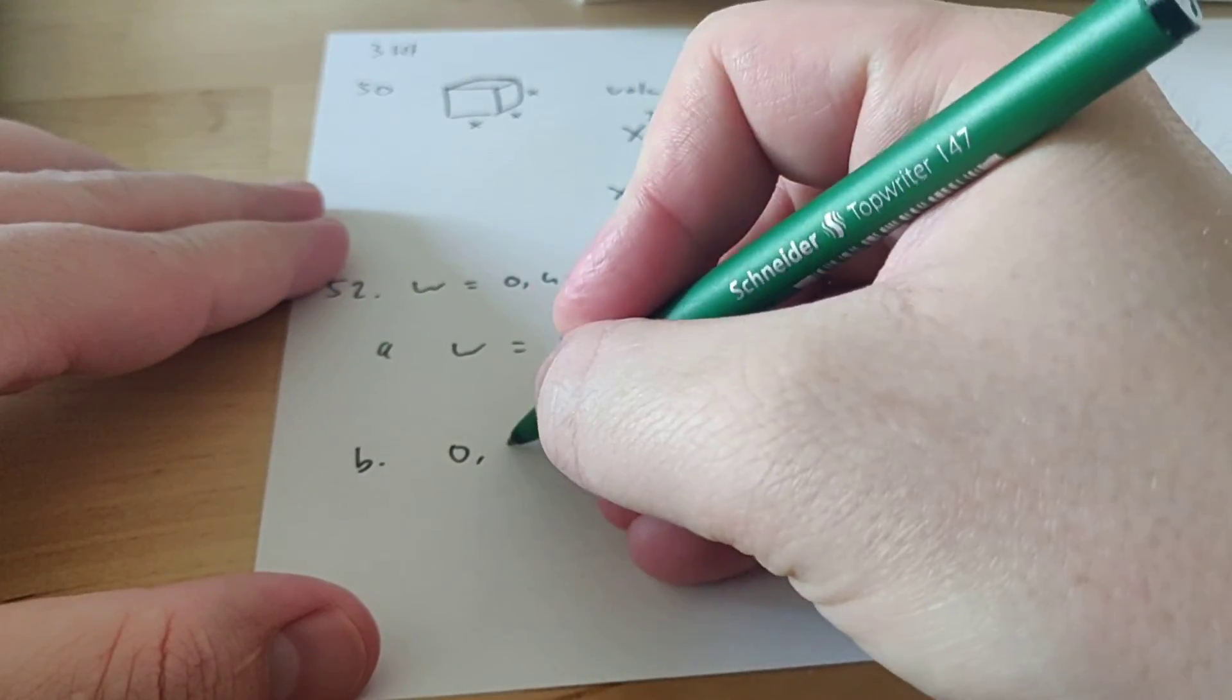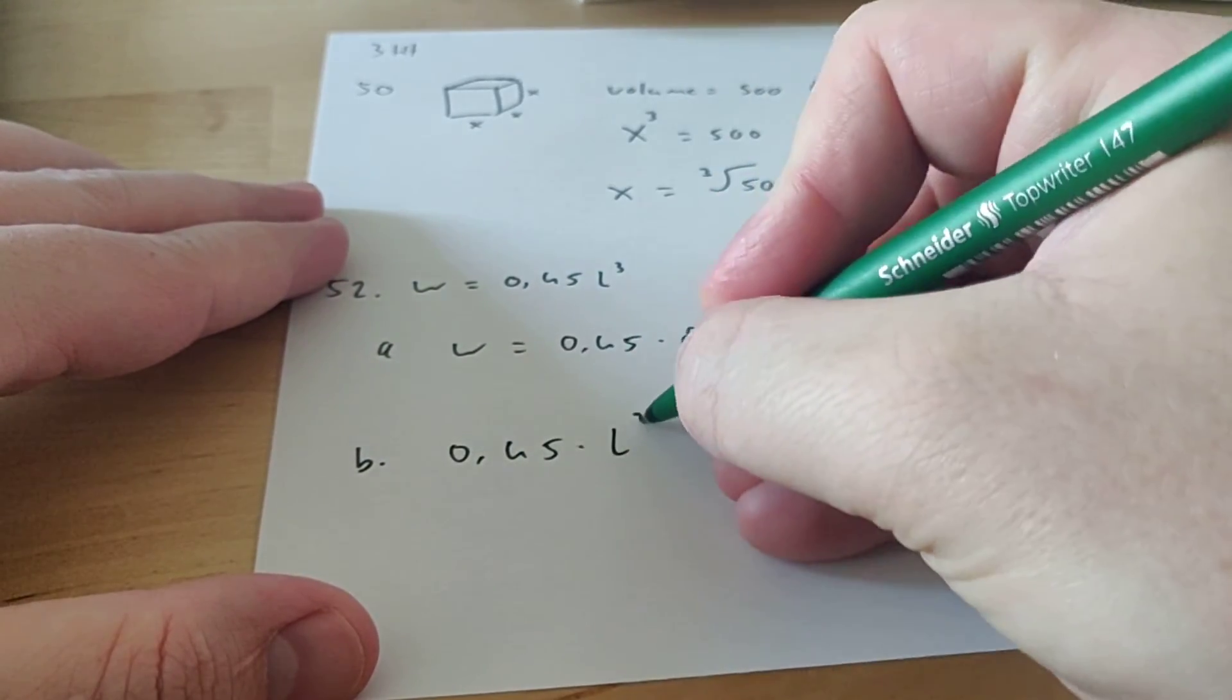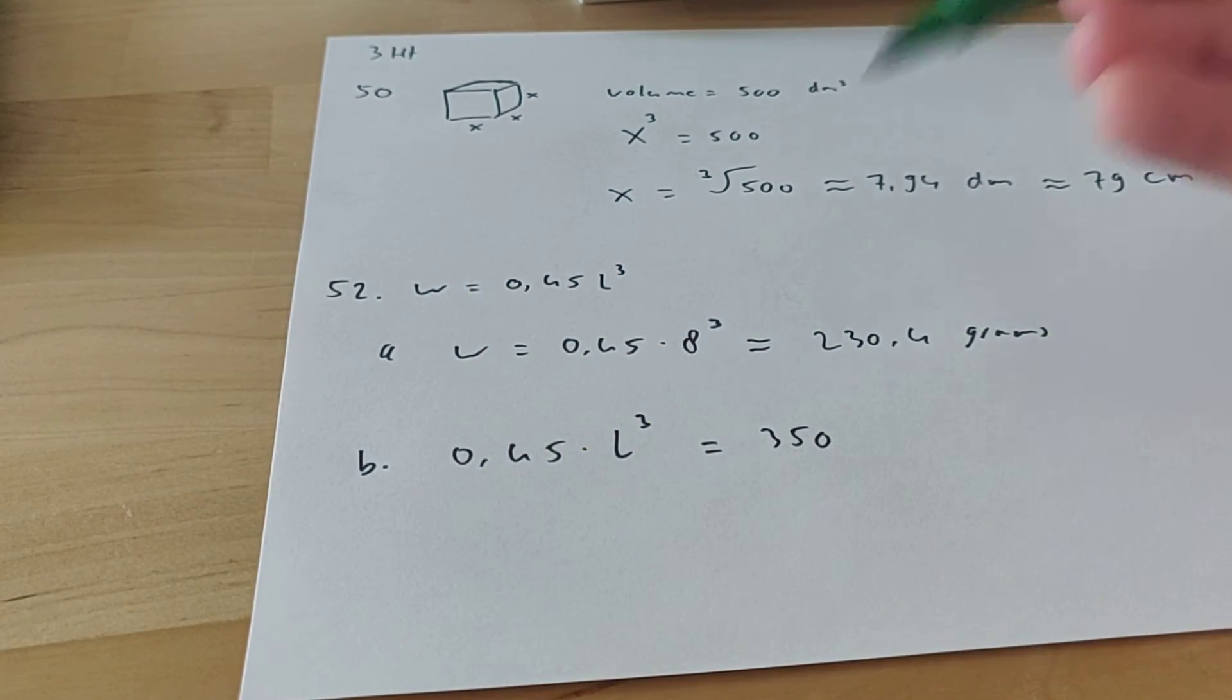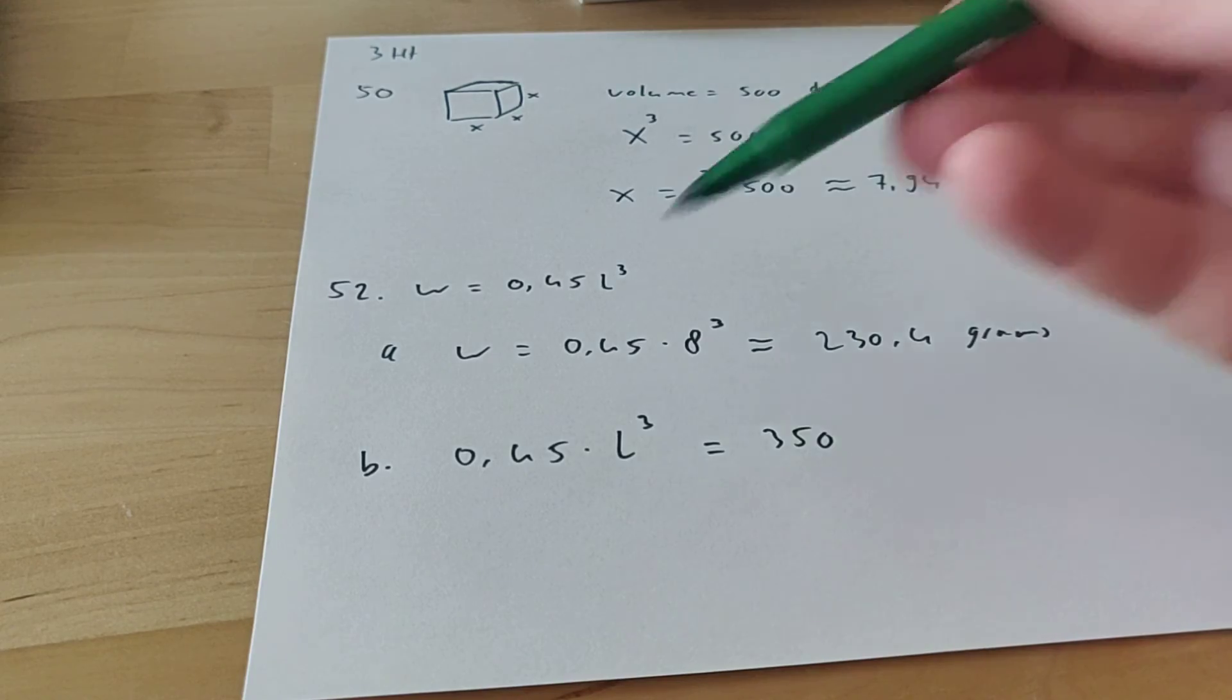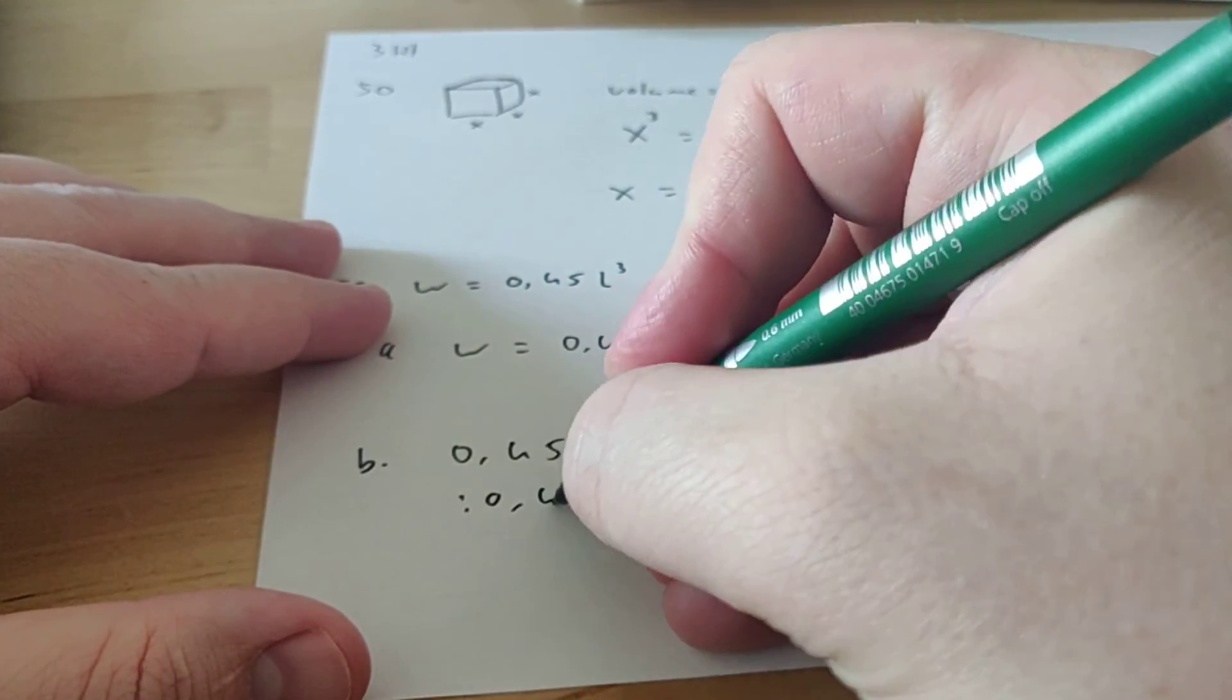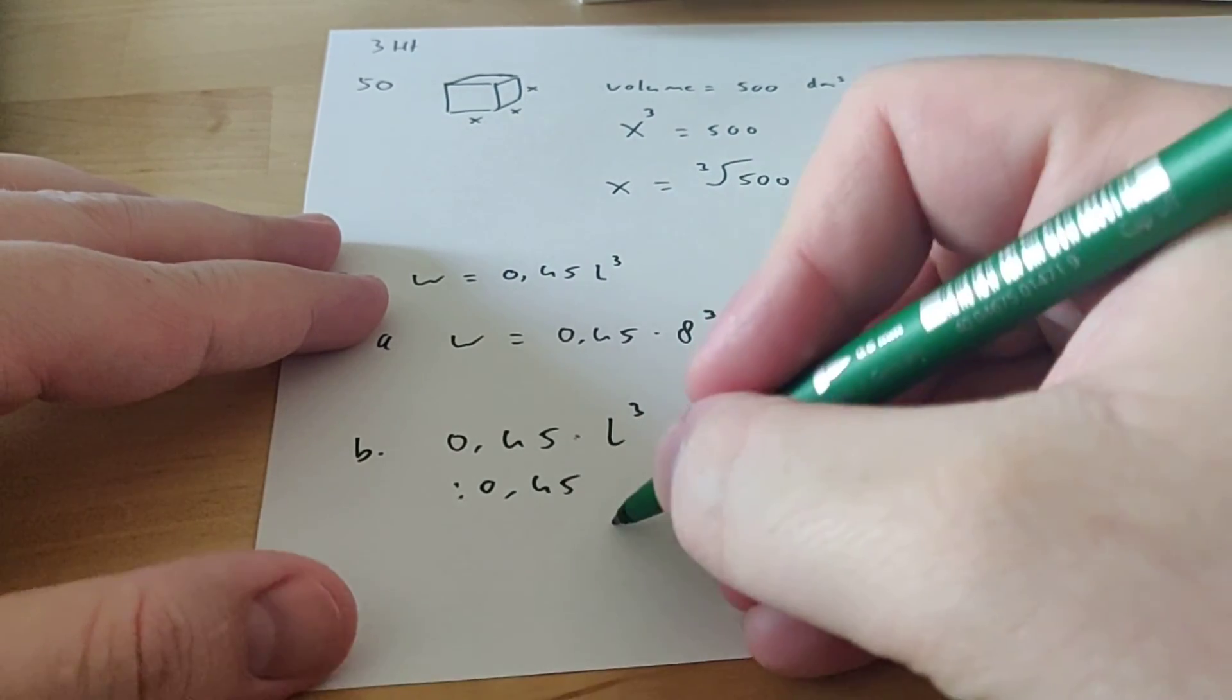We get 0.45 times L to the power of 3 equals 350. All right, so now we need to figure out what this is. So first we're going to divide both sides by 0.45.